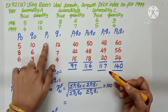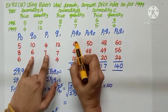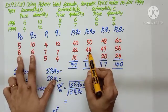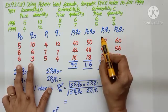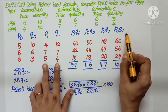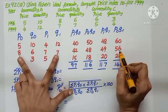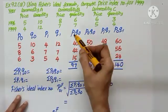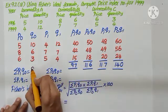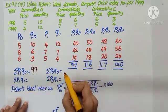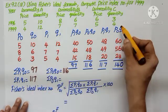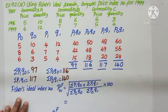Now let us multiply. P1Q0 multiplying: 40, 42, 15. P0Q0, multiply these two: 5 into 10, 8 into 6, 6 into 3. P1Q1, multiply these two: 4 into 12, 7 into 7, 5 into 4. P0Q1, multiply these two: 5 into 12, 8 into 7, 6 into 4. Total it all, remember to put sigma. Sigma P1Q0 is 97, sigma P0Q0 is 116, sigma P1Q1 is 117, sigma P0Q1 is 140.